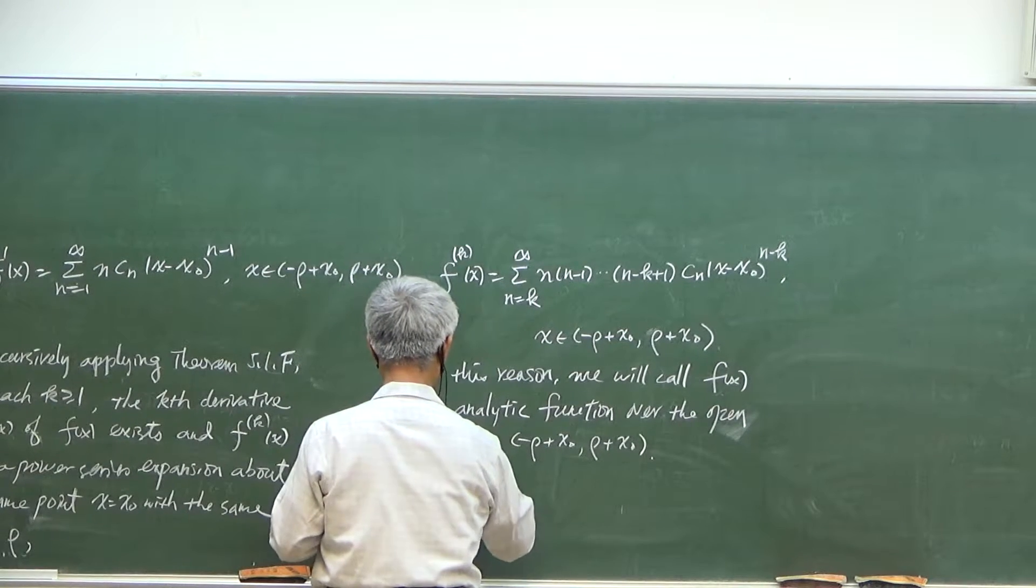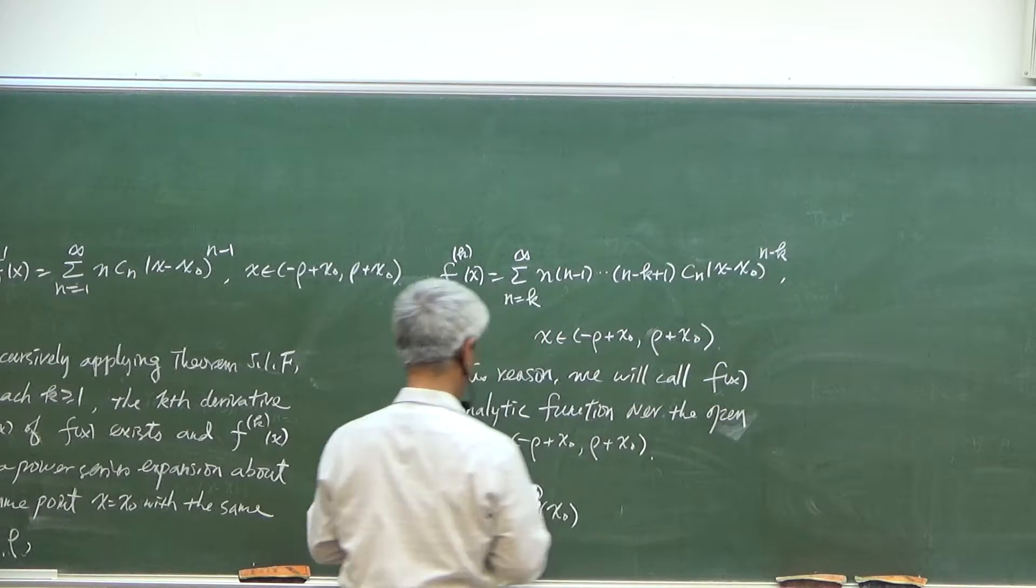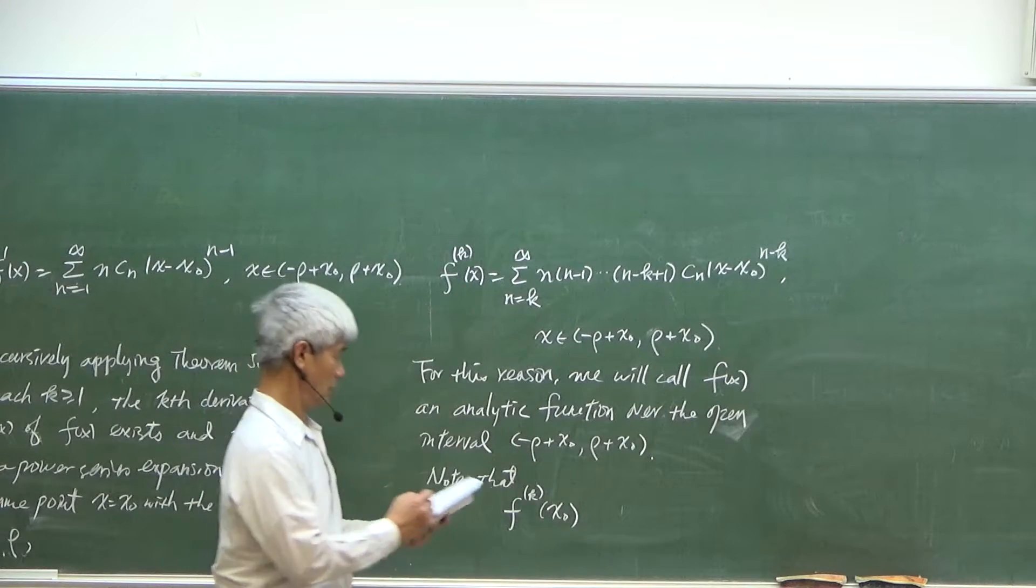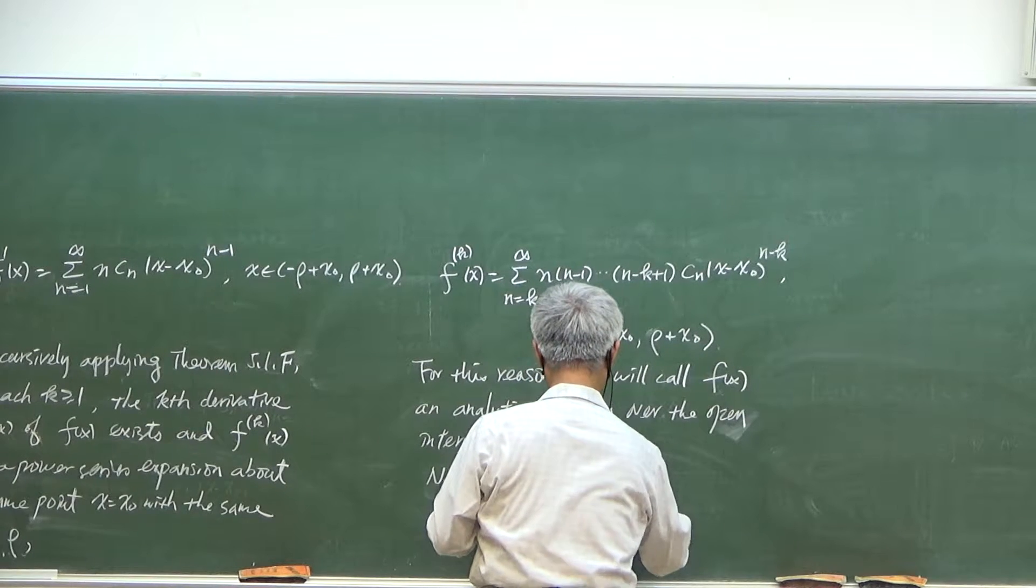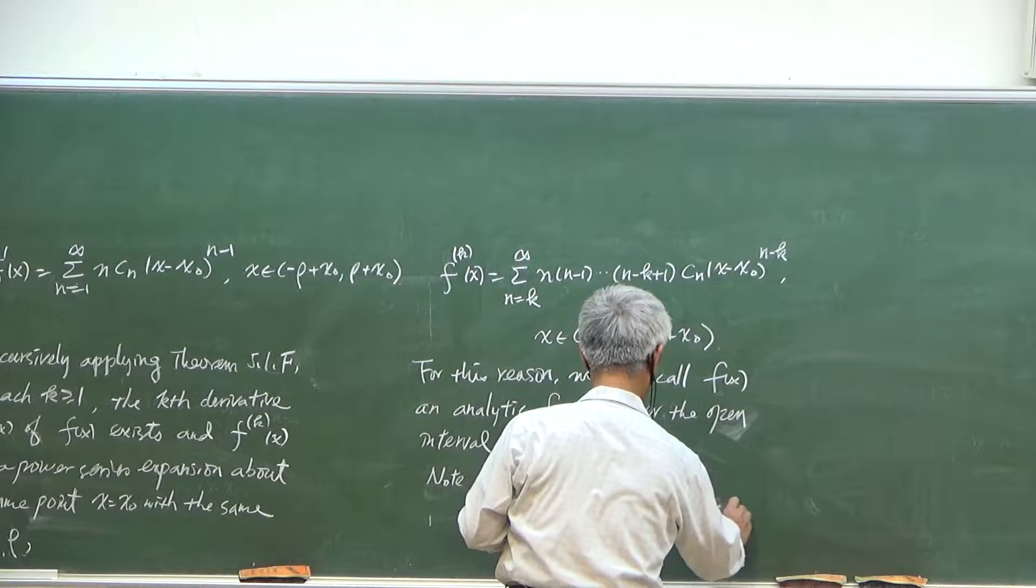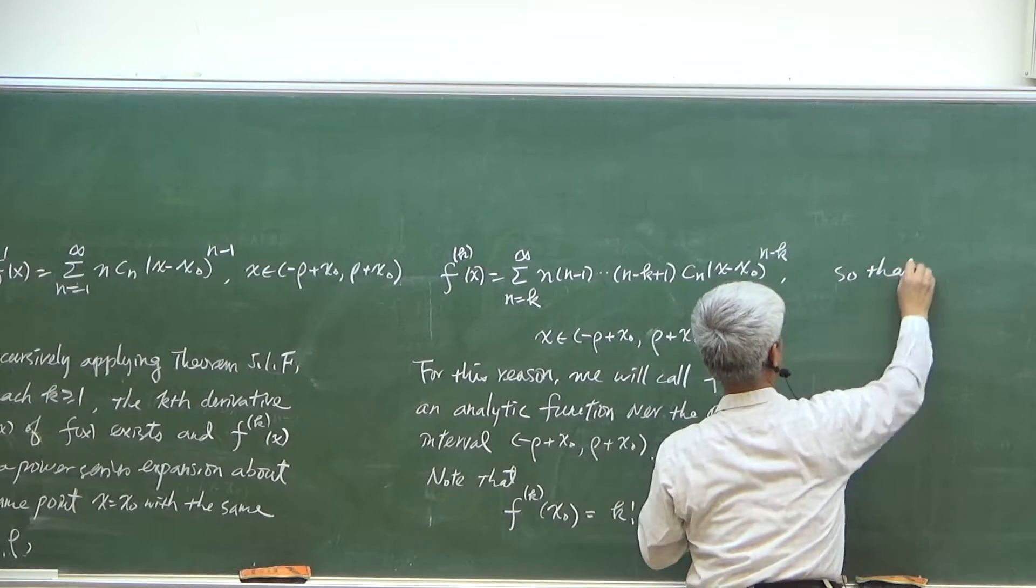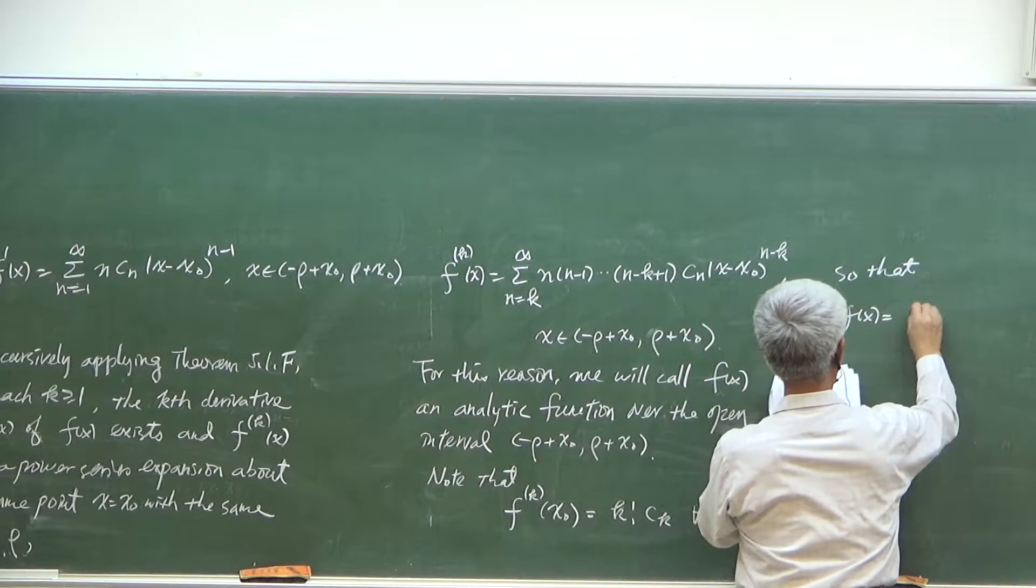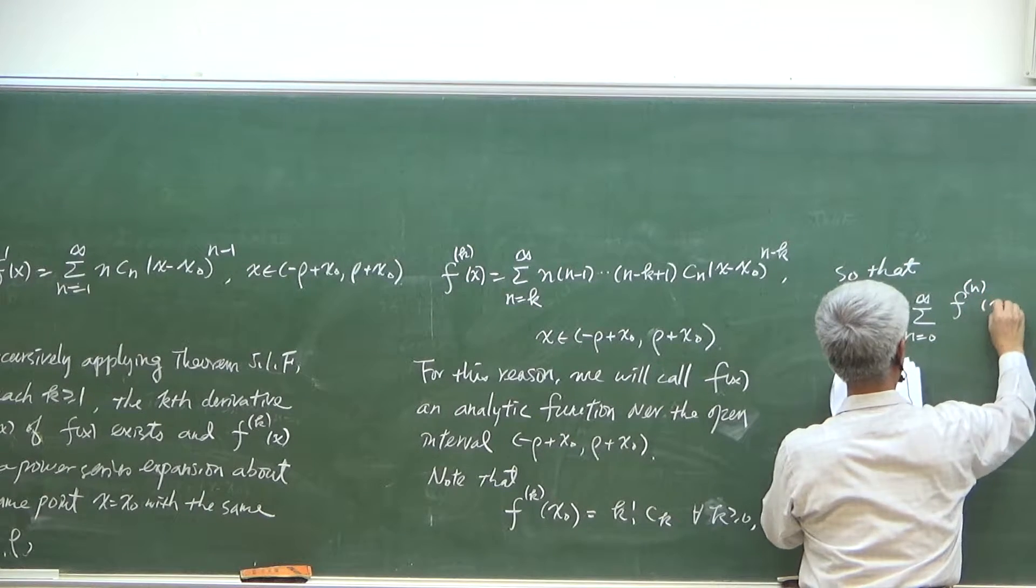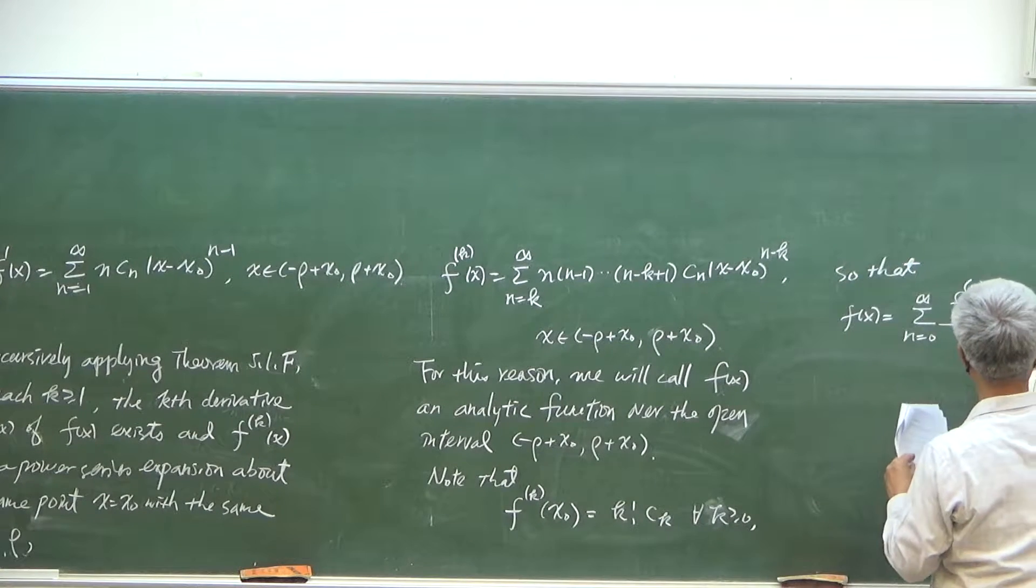And in the last part, the k-th derivative, when we evaluate the k-th derivative at x equal to x0, so when you put x equal to zero, you find that this is equal to k factorial times c sub k.